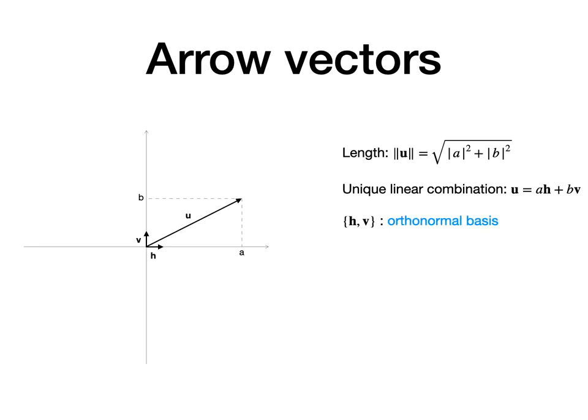Thirdly, since any position vector in the plane can be written this way, the set containing h and v is called a basis for the position vectors. Actually, it's an orthonormal basis because both h and v have unit length and they are orthogonal to each other.